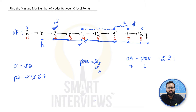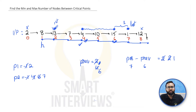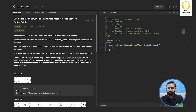If p1 remains minus one, it means no critical point was found. If p1 and p2 are the same, only one critical point was found. In both conditions, return minus one and minus one. I recommend pausing the video here to review the logic and convert it to code in your language of choice before continuing.